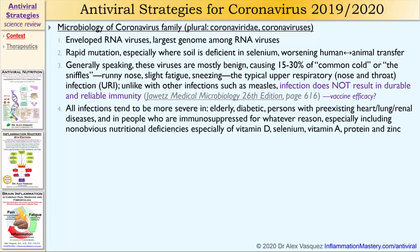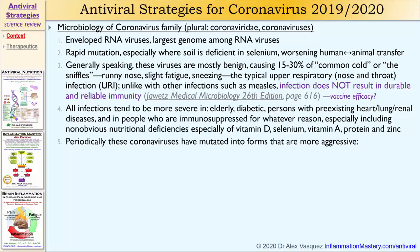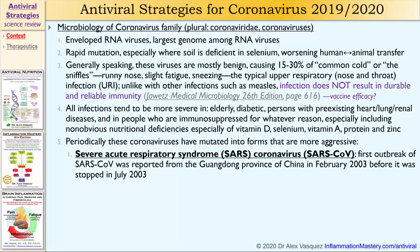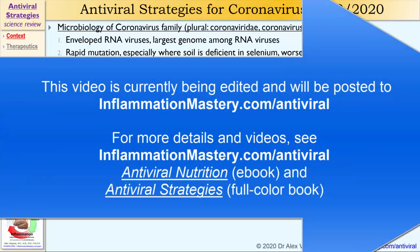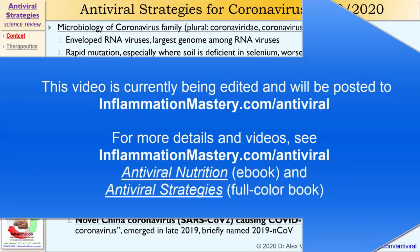All infections tend to be more severe in elderly persons, diabetics, persons with pre-existing heart, lung, and renal diseases, and in people who are immunosuppressed for whatever reason — especially including non-obvious nutritional deficiencies, especially of vitamin D, selenium, vitamin A, protein, and zinc. Periodically, these coronaviruses have mutated into forms that are more aggressive. We saw that with the SARS coronavirus in 2003, the MERS coronavirus in 2012, and now again with the so-called novel coronavirus, SARS-CoV-2 as it's now called.